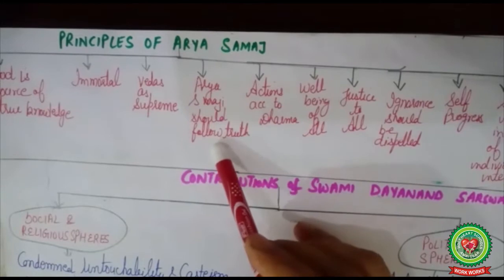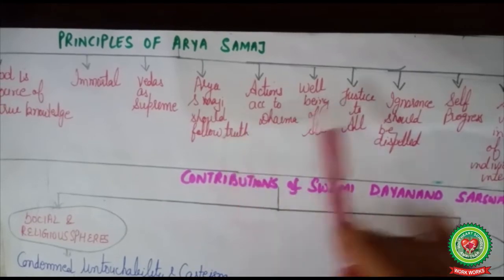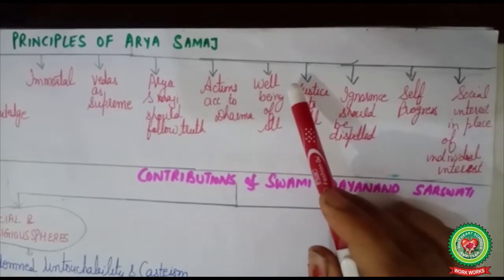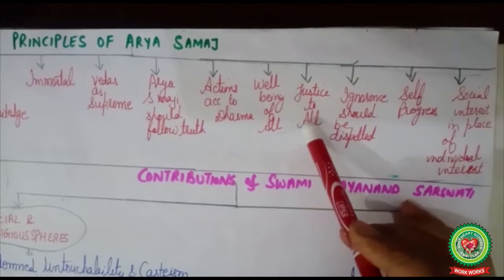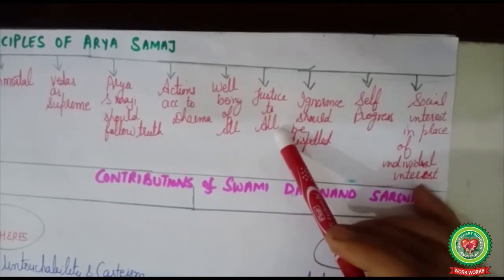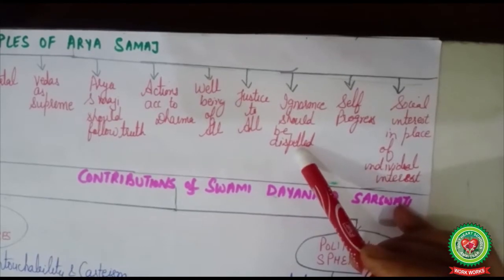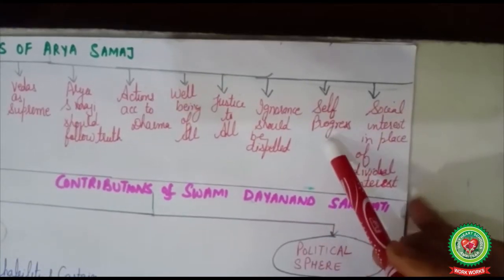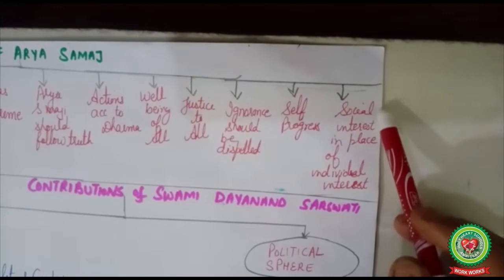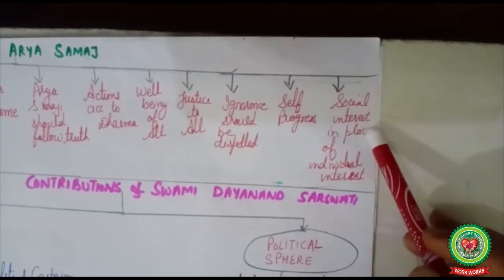According to Arya Samaj, its followers should follow truth and not the wrong path. They believed in actions according to Dharma — a person should know what is right and wrong and choose the right action. Arya Samaj believed in the well-being of all: that all human beings should be treated and developed equally, that justice should be done to all, and that there should be no exploitation on any basis. Ignorance should be dispelled, and it is the duty of every person to ignite the light of knowledge within. It is also everyone's responsibility to pursue self-progress, and if we must choose between social and individual interest, we should always give importance to the social interest.